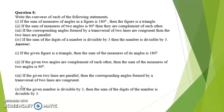Question number 8: write the converse of each of the following statements. First one: if the sum of measures of angles in a figure is 180 degrees then the figure is a triangle. Its converse: if the given figure is a triangle then the sum of measures of its angles is 180 degrees.